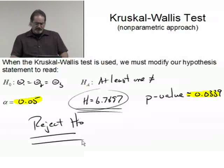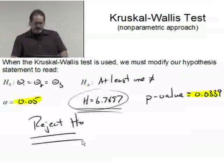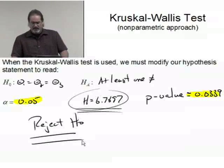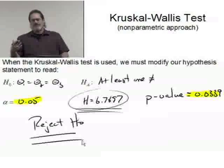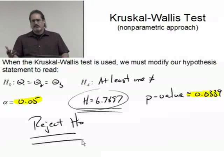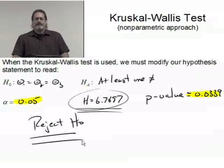When we did the ANOVA, we rejected. I forgot for a second. Yeah, we did reject. So I said somebody's different. It was 0.02 if I remember correctly, so we rejected both times. Now the question is which is bigger.